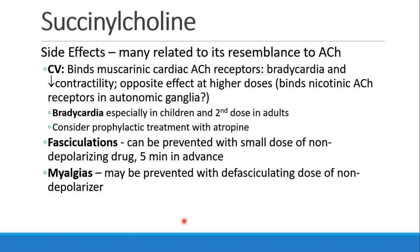Most side effects from succinylcholine are due to its resemblance to acetylcholine. In the heart, it binds to the muscarinic cardiac acetylcholine receptors and leads to bradycardia and decreased contractility. At higher doses, you could see an opposite effect, possibly because it binds to nicotinic receptors in the autonomic ganglia. Bradycardia is especially seen in children or with repeat dosing in adults. You may want to have atropine or glycopyrrolate available if you see bradycardia with succinylcholine.